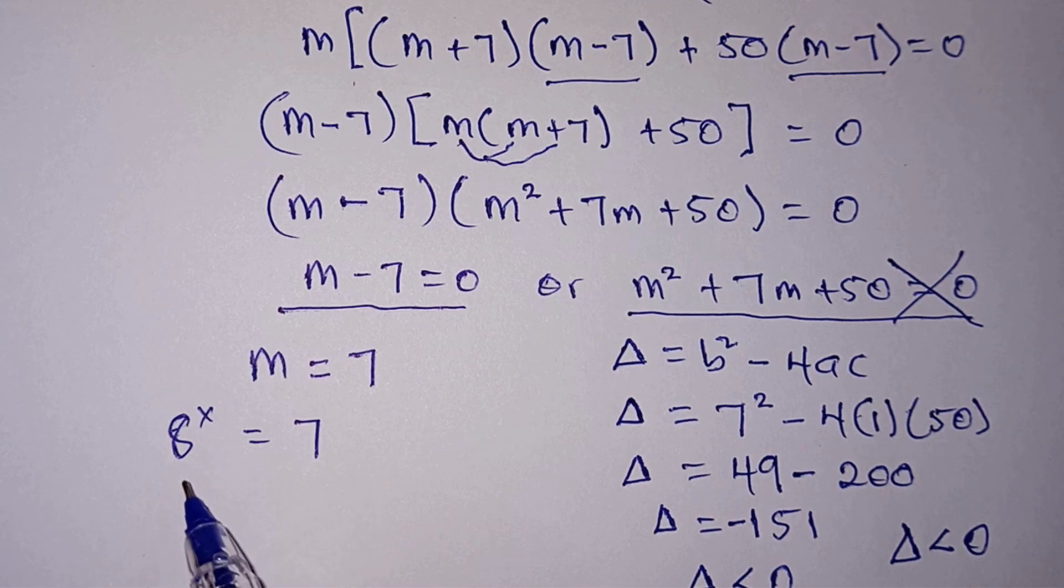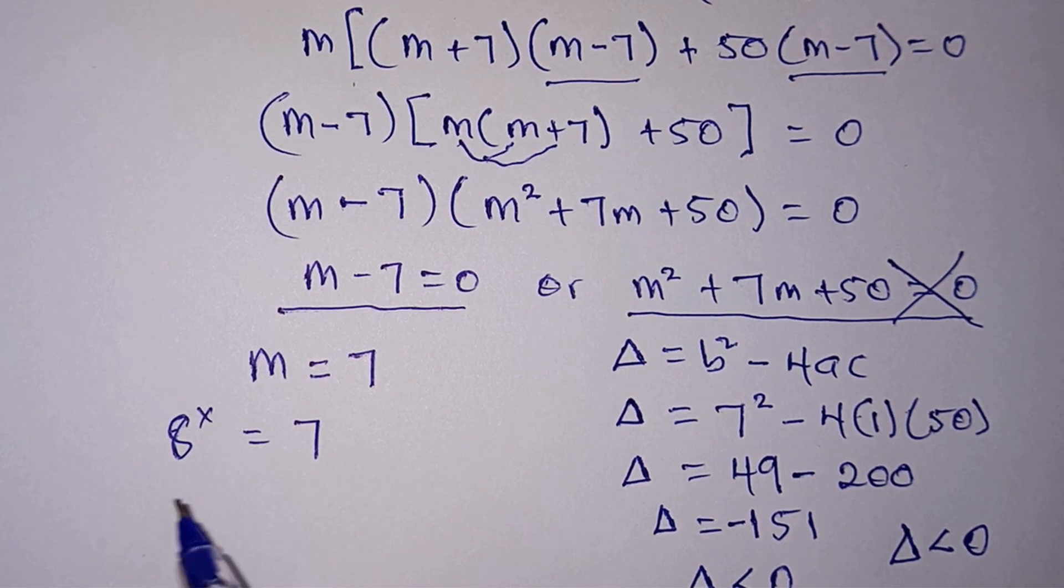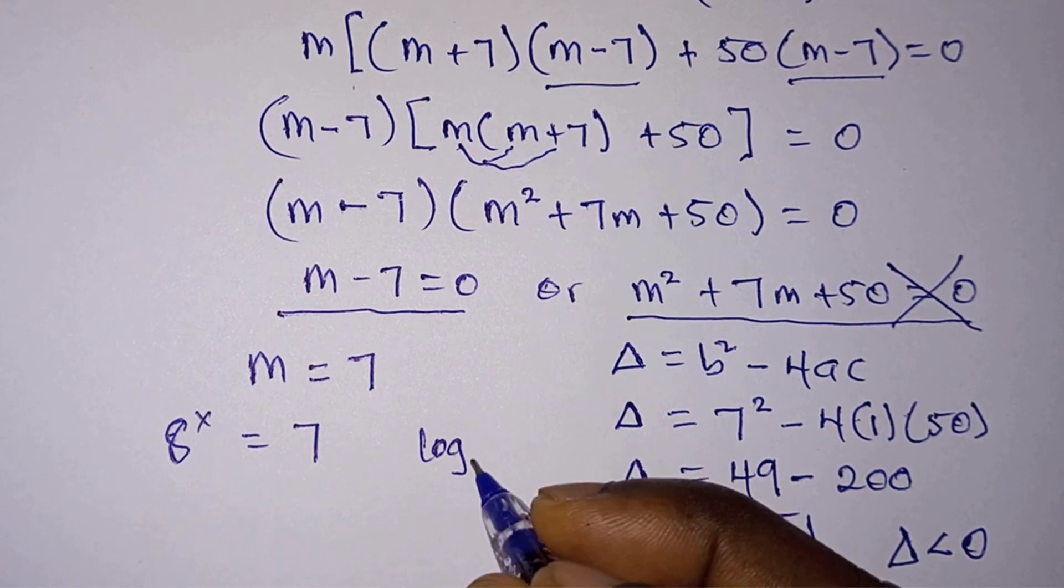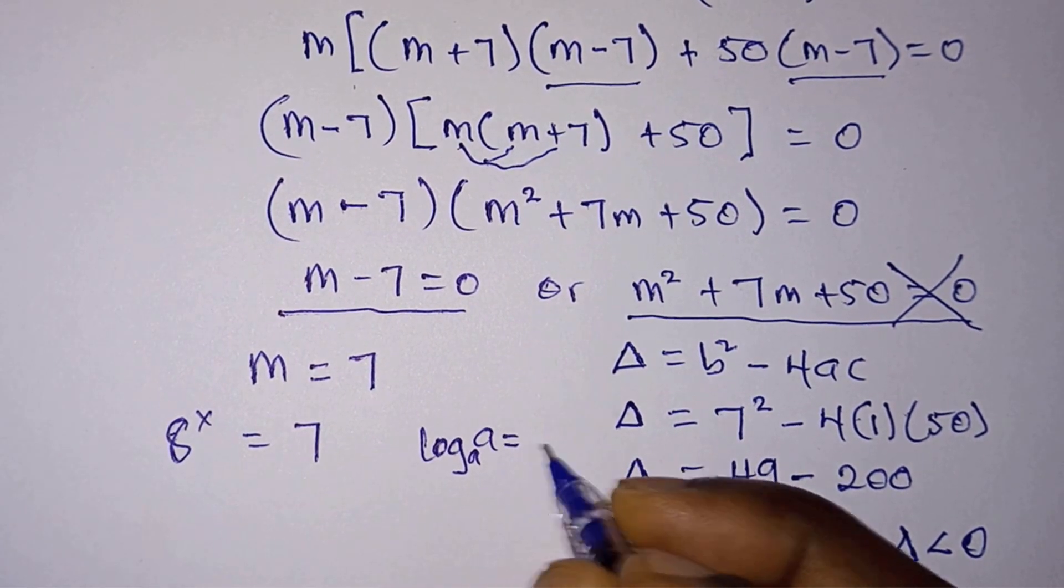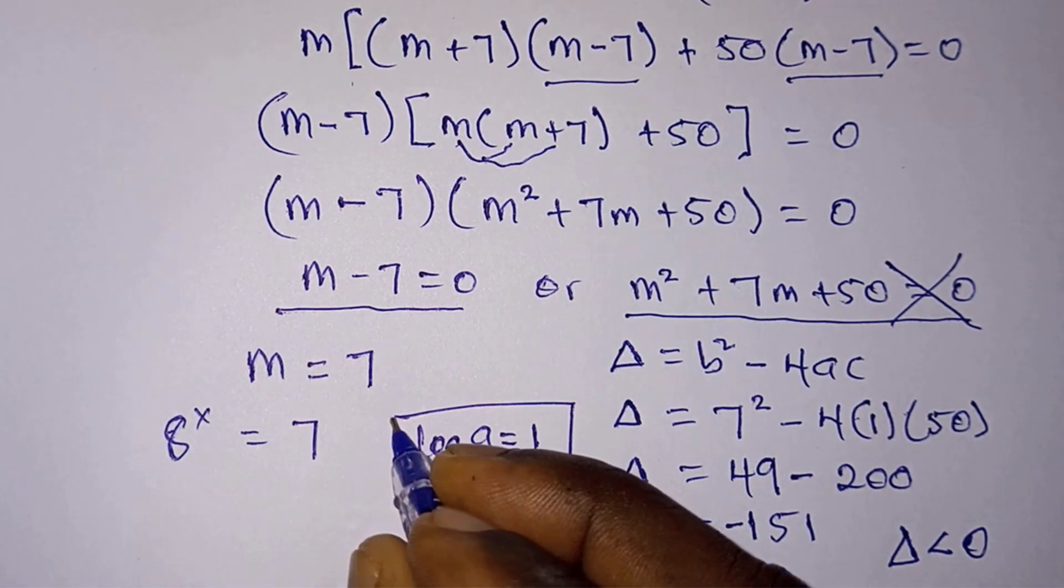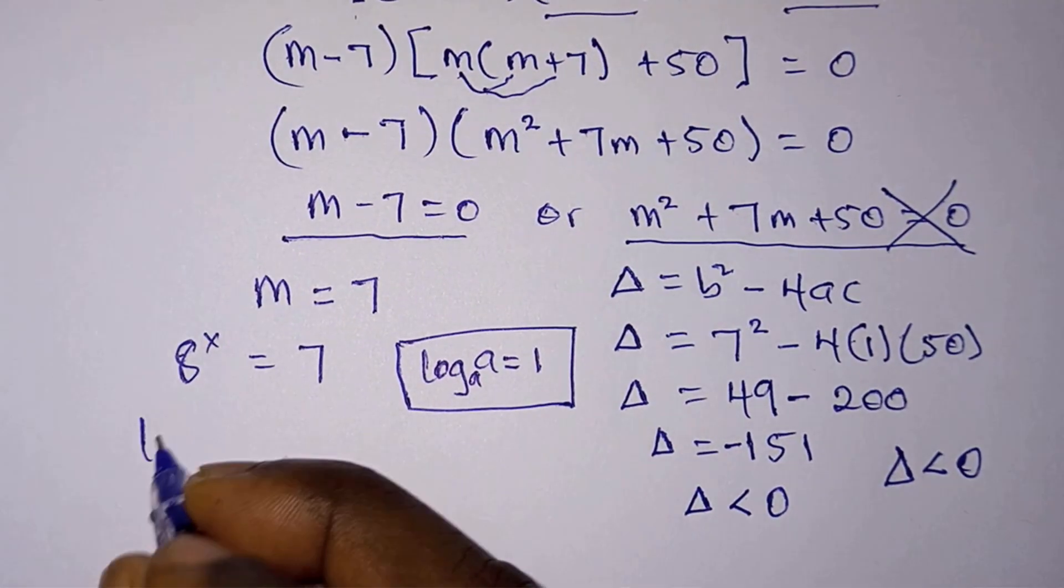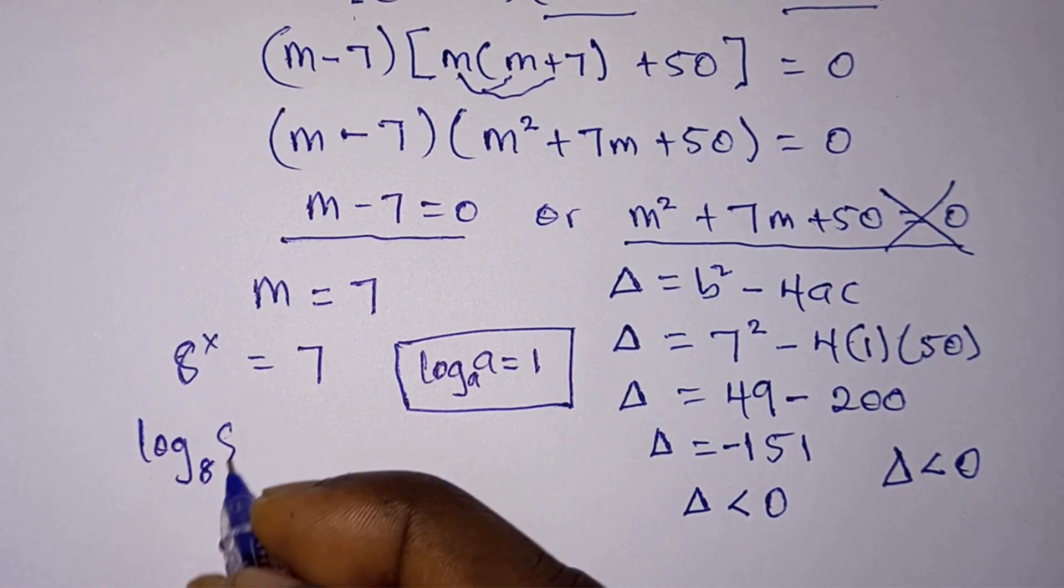Now we are looking for x in this exponential equation. Let's go ahead and introduce log in base 8 on each side of the equation, because if we introduce log in base 8, we will be able to generate something like log in base a of a, which is equal to 1, and it will make this exponential equation very simple to solve.